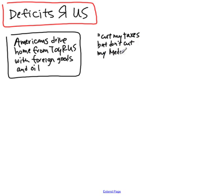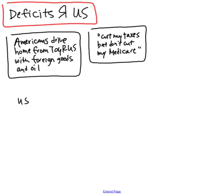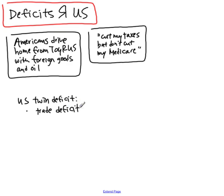We also have a big budget deficit. Americans want greater services from the government but don't want their benefits cut and don't want their taxes raised. As a result, the government is spending a lot more than it's bringing in. So you've got two deficits: you're importing a lot more than you're exporting, and you're spending a lot more than you're bringing in.